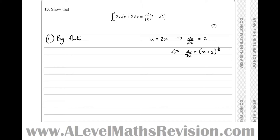That means the integral of dv/dx to get v equals: raise the power to give (x plus 2) to the 3 over 2, then divide by the new power — dividing by 3 over 2 is the same as multiplying by 2 thirds — and divide by the differential of the bracket. Since it's a linear expression, divide by 1, leaving us with the same thing.